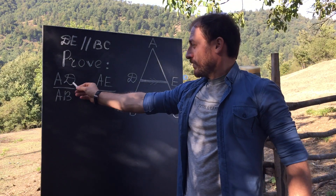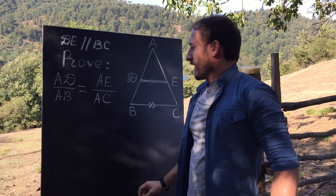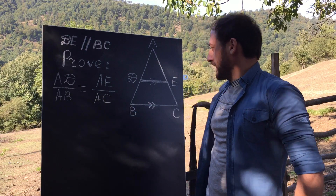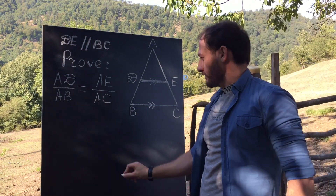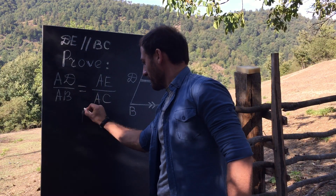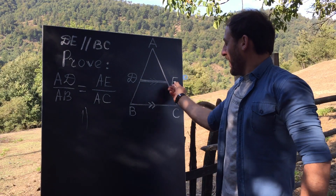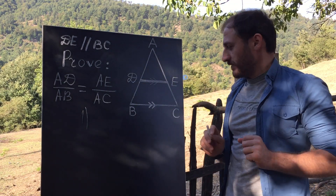We must prove AD over AB equals AE over AC. Step 1: DE parallel BC — this is given.